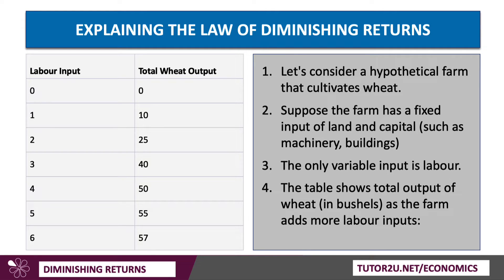As we add more labour, you can see our output goes up from 0 to 10 to 25 to 40. We can work out the marginal product of adding extra labour. The first unit of labour adds 10 units of wheat. The second unit of labour takes our output to 25, so that adds 15. The third unit of labour also adds 15 units to production.